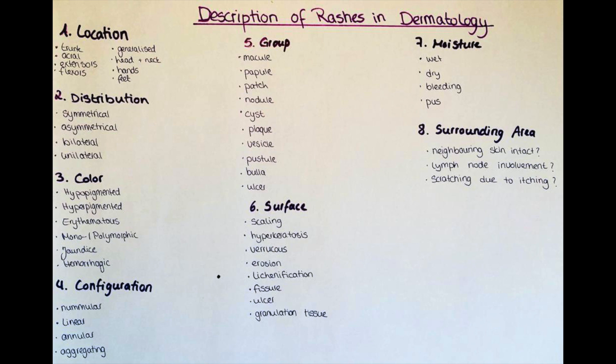In the next step you will describe the color of the rash. Here you can use terms like hypopigmented or hyperpigmented. Also you can describe a rash as erythematous when it appears reddish in color, or hemorrhagic when there is bleeding or capillary distension involved. Jaundice or icterus is a term to describe yellow discoloration of the skin and sclera due to high bilirubin levels. Also you can describe whether the color is uniform — so monomorphic — or if the color varies between areas of the rash, then it is polymorphic.